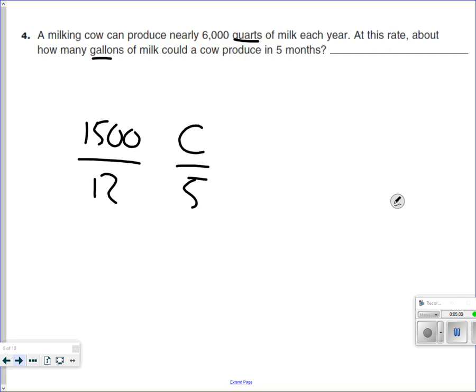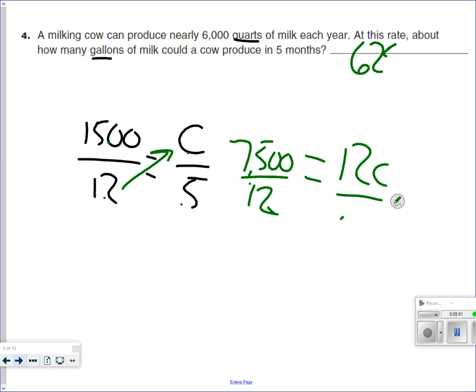And the next one is, so we want to know how many gallons of milk would be in 5 months. So this is what we're trying to find. We're going to multiply, so I have an equal sign here. This would be 12C. And this over here, 5 times 1,500, I believe it is 7,500. But I'm going to double check on my calculator. 7,500. Now what do we have to do to get rid of this C? I have to bring this over here, and I have to divide by 12. 7,500 divided by 12 gives me 625 for an answer.